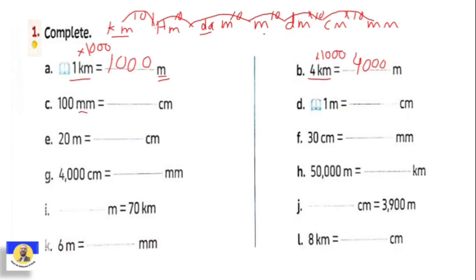One hundred millimeters to centimeter: find millimeter and centimeter on the chart — centimeter is right next to millimeter. We go back one step from millimeter to centimeter, so we divide by ten, meaning we cancel one zero. Cancel one zero from one hundred gives us ten. So the answer is ten centimeters.